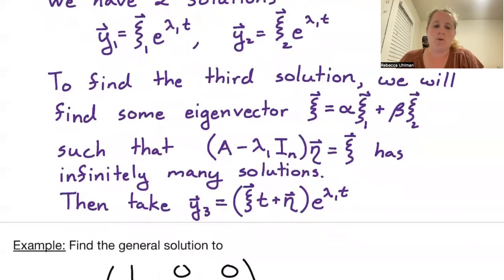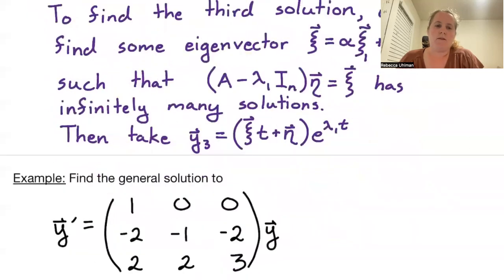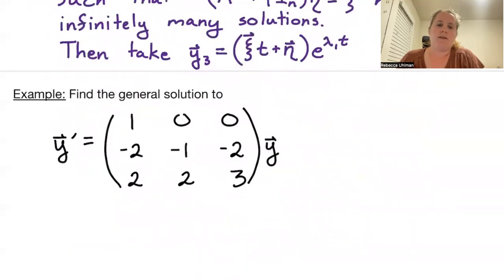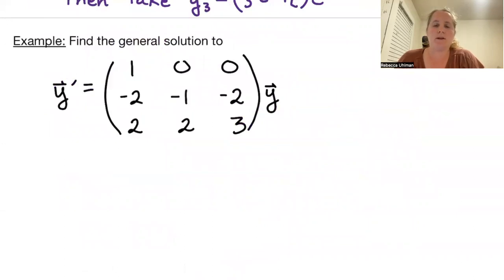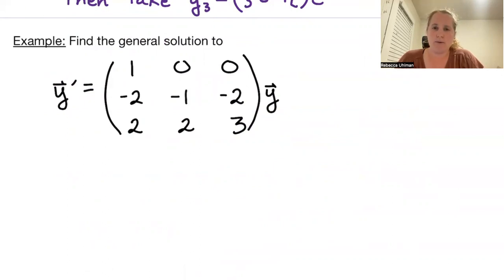For example, let's find the general solution to y prime equal to A times y, where A has first row 1, 0, 0; second row negative 2, negative 1, negative 2; and third row 2, 2, 3.